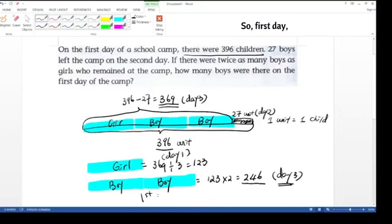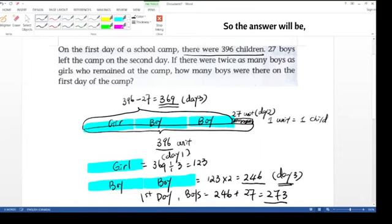So first day, the boys will equal to 246 plus 27 equal to 273. So the answer will be, we will have 273 boys on the first day of camp.